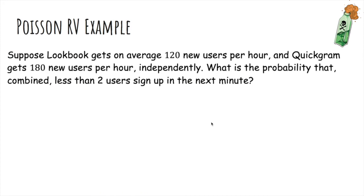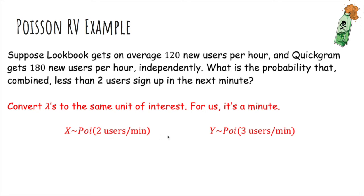So now let's do an example. Suppose Lookbook gets on average 120 new users per hour, and QuickRam gets 180 new users per hour independently. What's the probability that combined less than two users sign up in the next minute? Well, let's convert lambda to the same unit of interest. For us, it's a minute. So on average, Lookbook gets two users per minute, and QuickRam gets three users per minute.